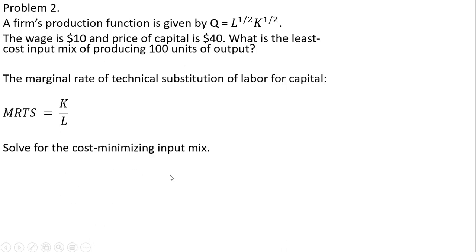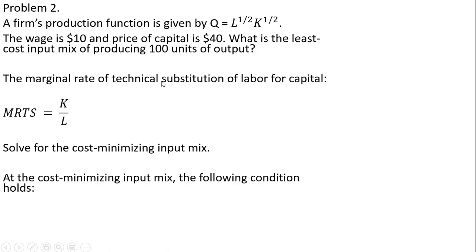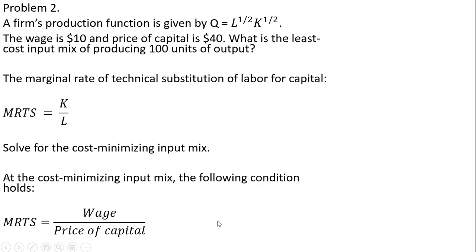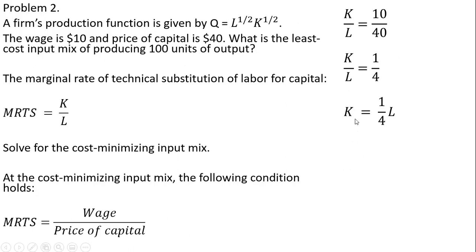We again want to solve for the cost-minimizing input mix. When dealing with the marginal rate of technical substitution, we set MRTS equal to the wage divided by the price of capital: K over L equals $10 divided by $40. That simplifies to one-fourth. Multiplying through by L, and then multiplying through by 4 to clear the fraction, gives us L equals 4K.